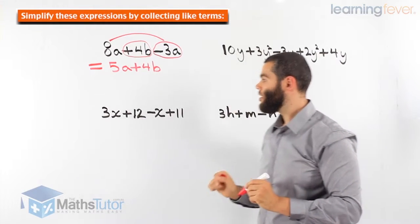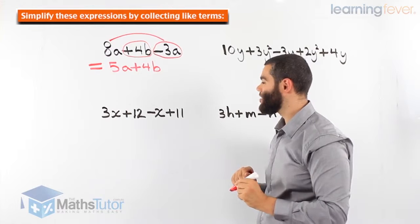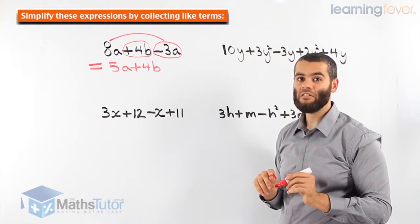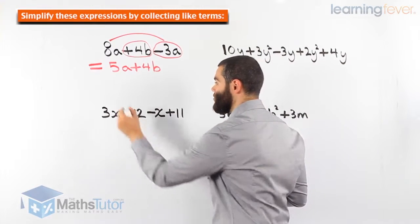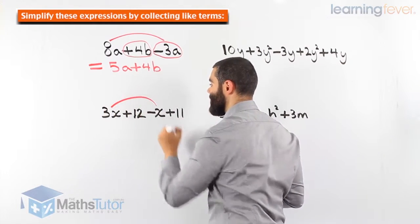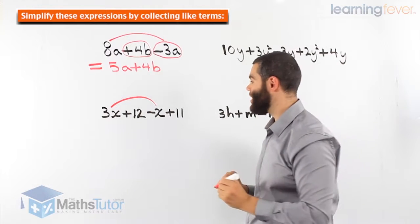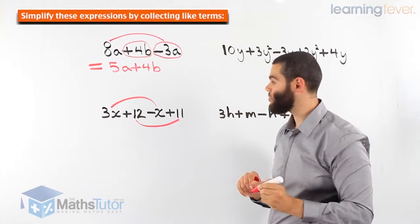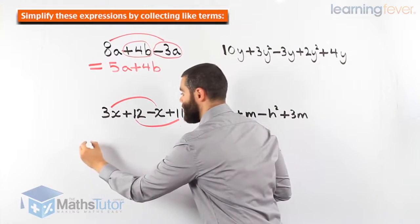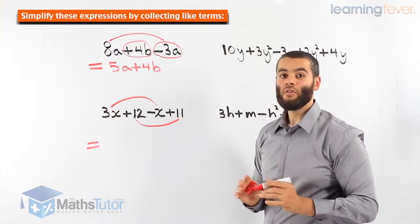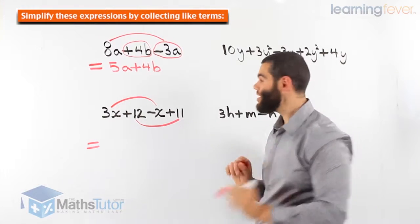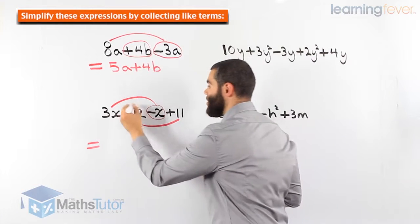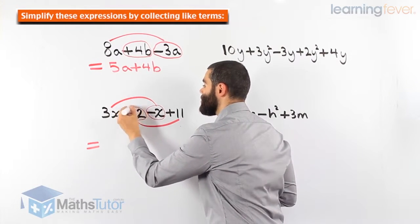This example: 3x plus 12 minus x plus 11. Again, we collect like terms by adding and subtracting only the like terms. The like terms are 3x and x, and 12 and 11 are also like terms. So 3x minus x — remember, because the minus is attached to the x, and the plus is attached to the 12.